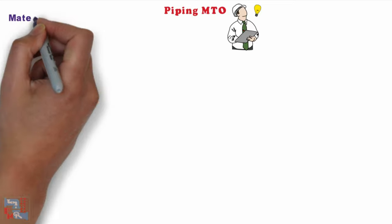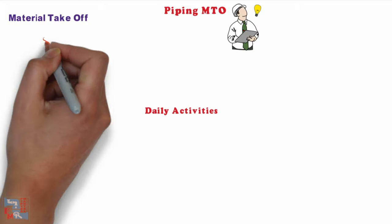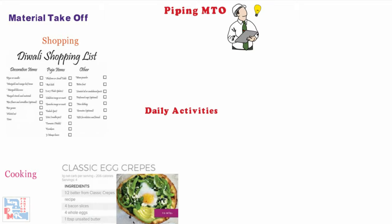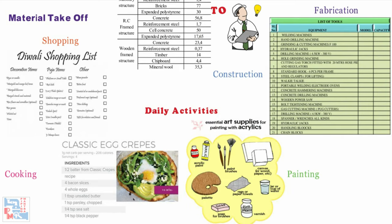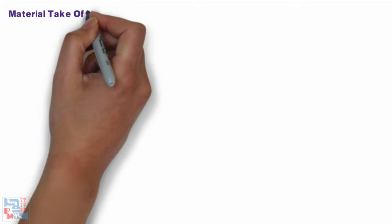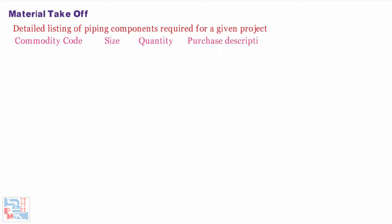MTO stands for material takeoff, and in layman terms, MTO tasks are involved in most of our daily activities whether it is shopping, cooking, painting, fabrication, construction, and many more. Material takeoff or MTO of piping items is a detailed listing of piping components required for a given project. It includes commodity code, size, quantity, and purchase description for all the items.